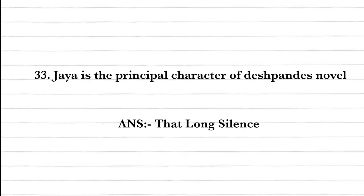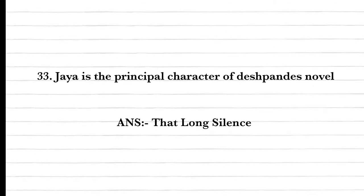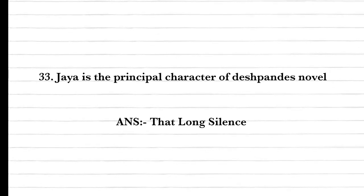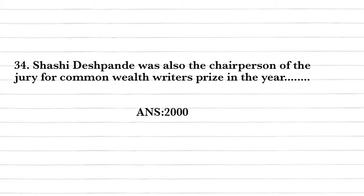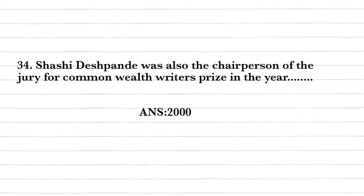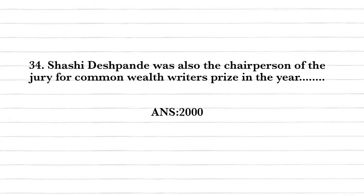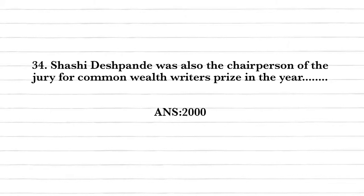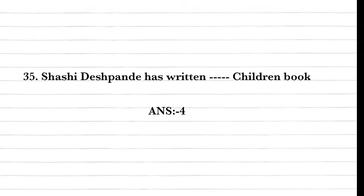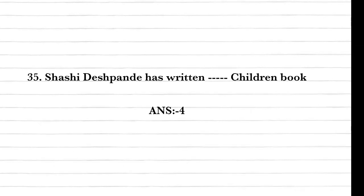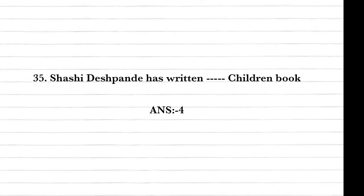Question thirty-three: Jaya is the principal character of Shashi Deshpande's novel. Answer: That Long Silence. Question thirty-four: Shashi Deshpande was also a chairperson of the jury for the Commonwealth Writers' Prize in the year 2000. Question thirty-five: Shashi Deshpande has written four children's books.